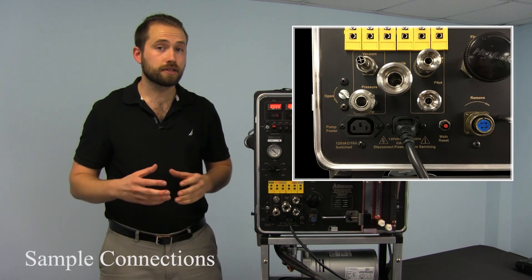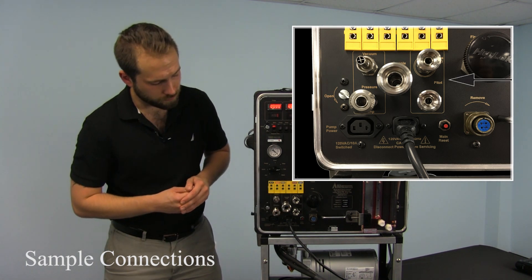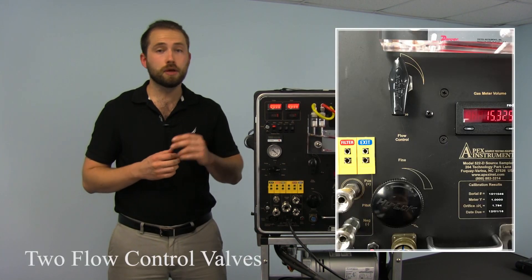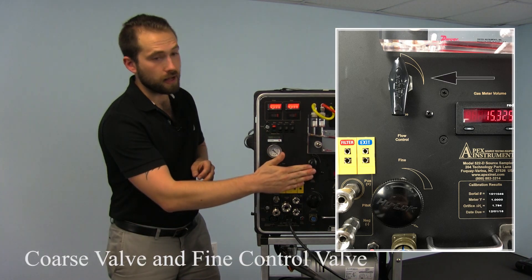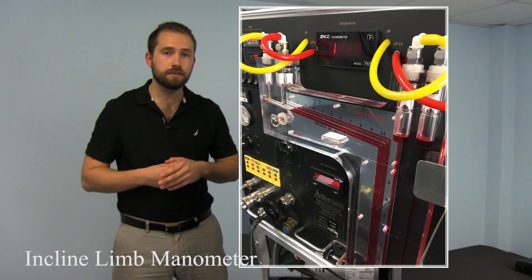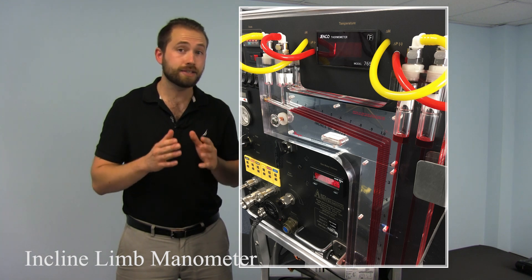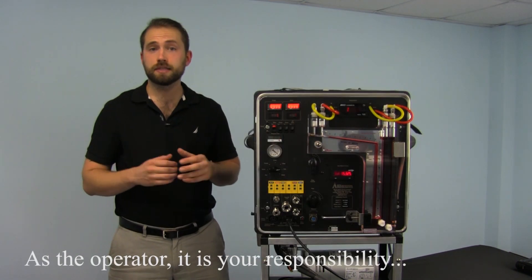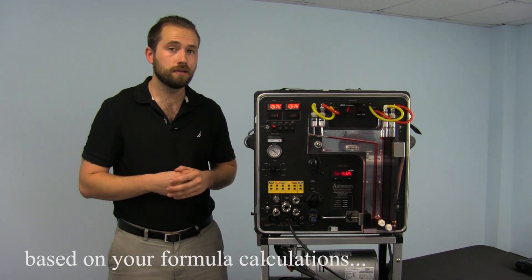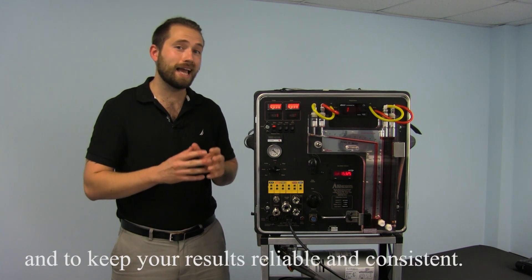We have all the connections conveniently in one place. The vacuum connections, the sample inlet, the pitot connections, the power in, power out, and an amphenol for power to your heater. We have two flow control valves, the coarse valve, and the fine control valve. And finally we have the incline Lynn manometer, which measures the differential pressure created by the velocity in the stack and the velocity of the gas that you're sampling. As the operator, it's going to be your responsibility to keep the sampling rate at the required amount based on your formula calculations to keep the test isokinetic and to keep your results reliable and consistent.